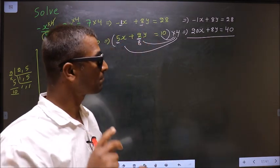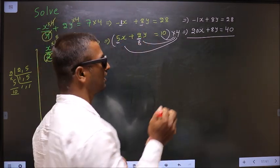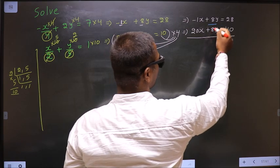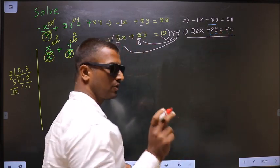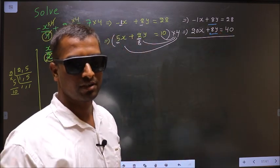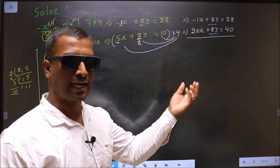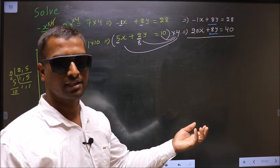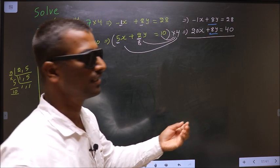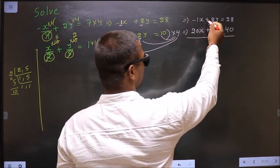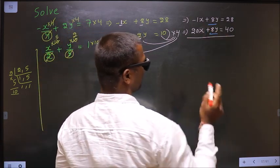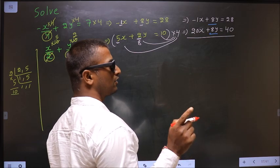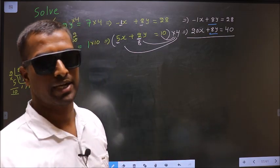Clear so far? Now, I have made y coefficient same. Only to cancel them out. So now you should decide by adding the two equations, they cancel out or by subtracting. See here. Here it is +8. Here also +8. So if I add, they do not cancel out. So I should subtract.